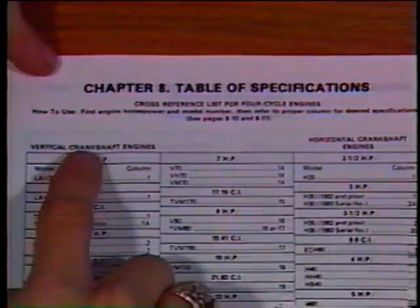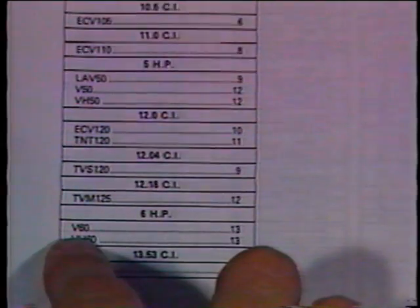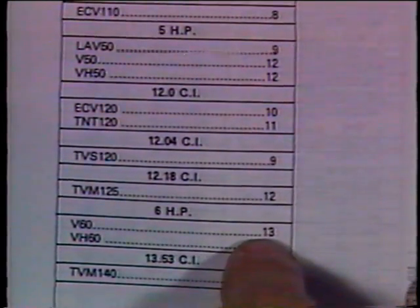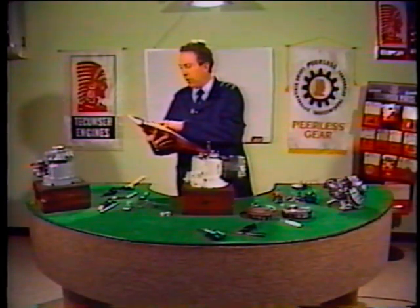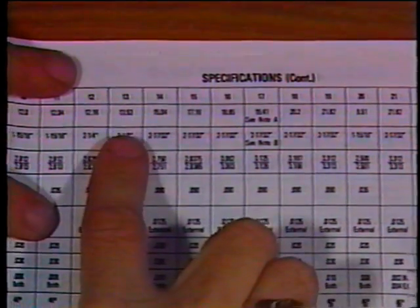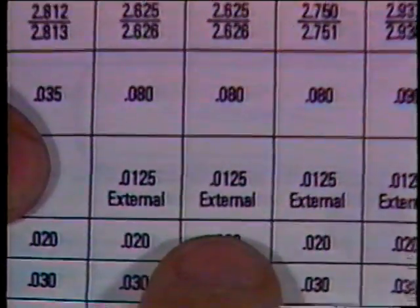Take your model number of your engine. The engine we're going to time today happens to be a V60. Looking in the book, we find that V60 is located in reference column number 13. Turning to reference column number 13, we find that the before top dead center timing dimension is 80 thousandths before top dead center. We also find that the point setting is 20 thousandths.